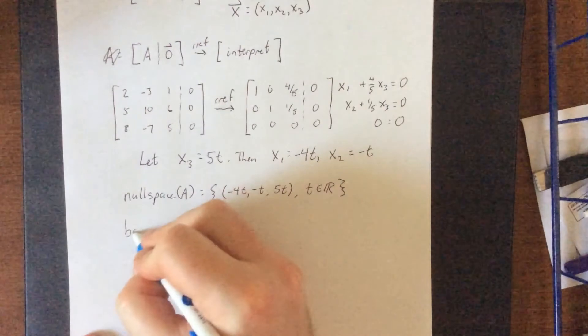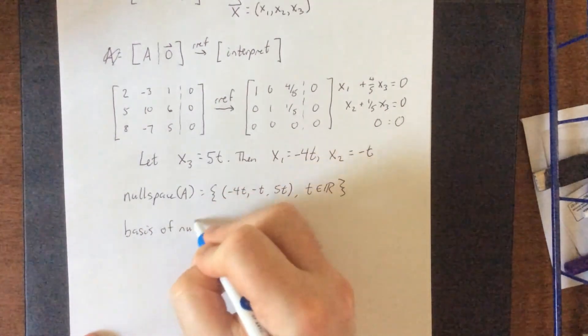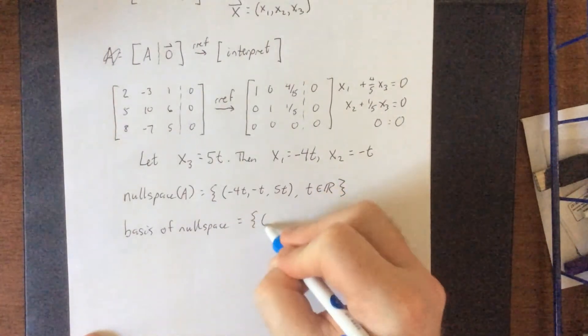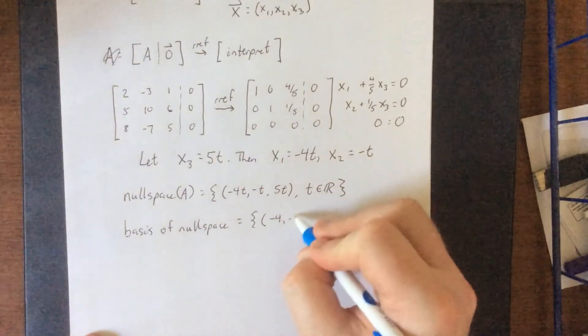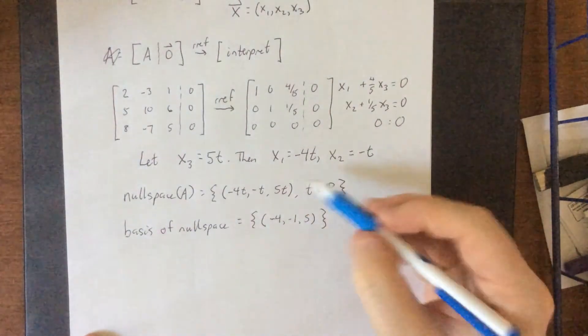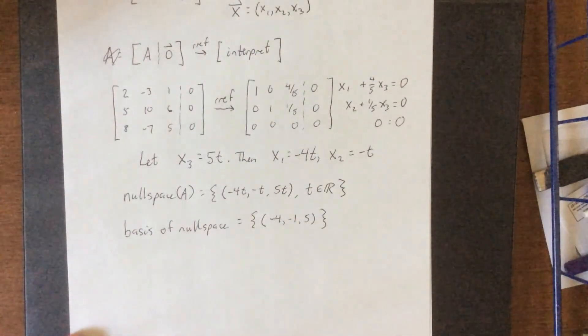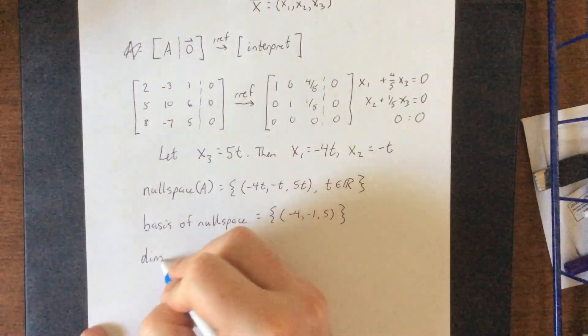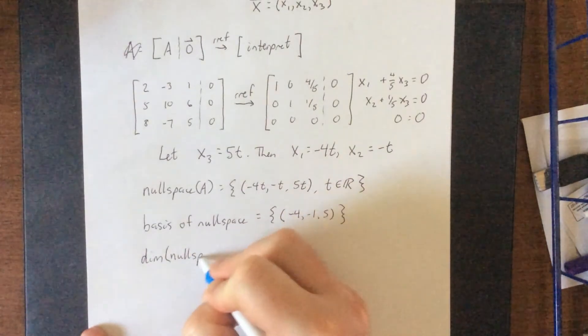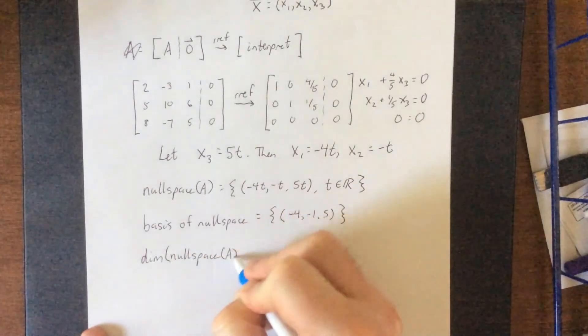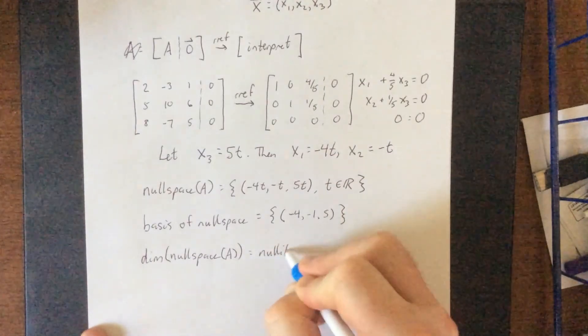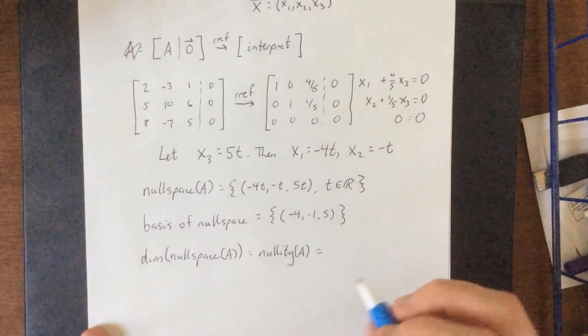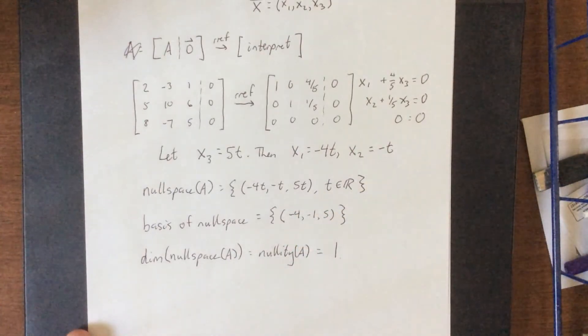We could also set this up as now a basis of the null space, which would be just the single vector negative 4, negative 1, 5. Essentially just what you get when you factor the t out of the representation of the null space. And finally, this allows us to get the dimension of the null space of a, also known as the nullity of a. The nullity of a would be the dimension of the null space. I see one vector in that basis, therefore this thing is one dimensional.